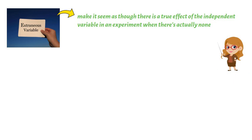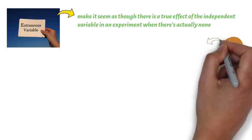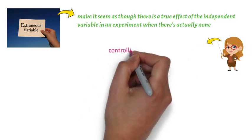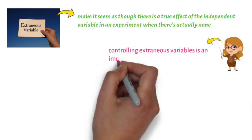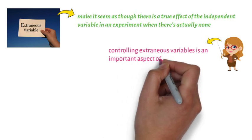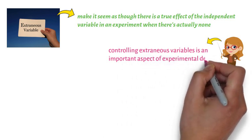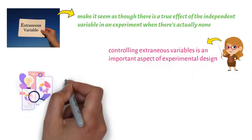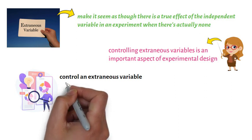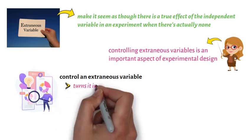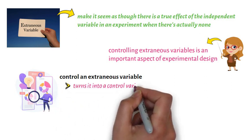Hence, controlling extraneous variables is an important aspect of experimental design. When the researcher controls an extraneous variable, she turns it into a control variable.